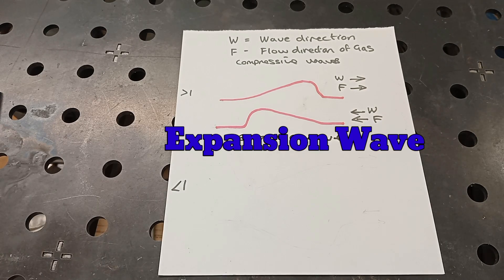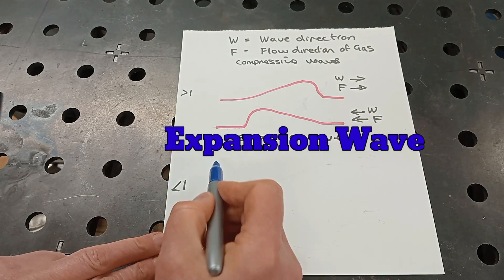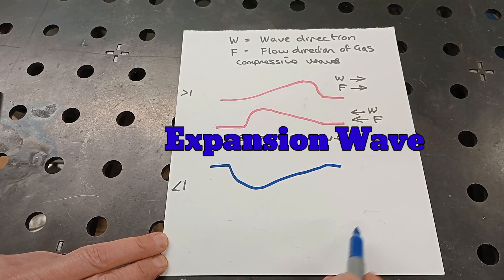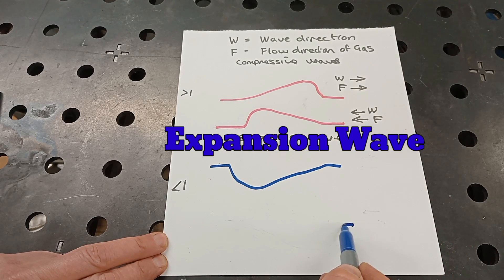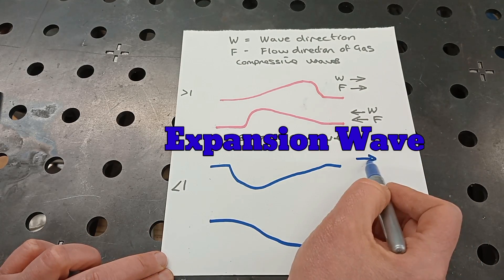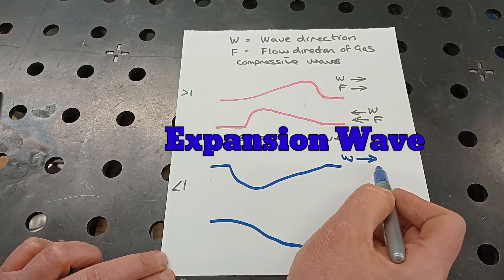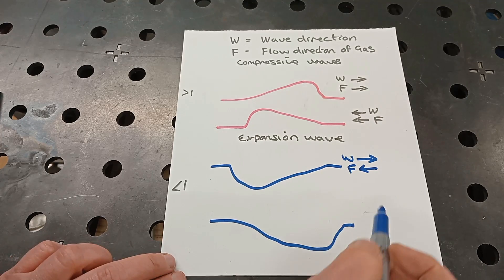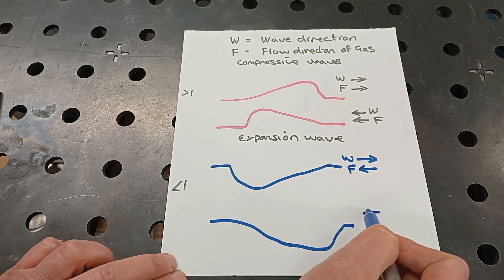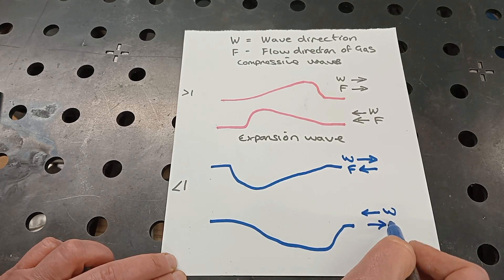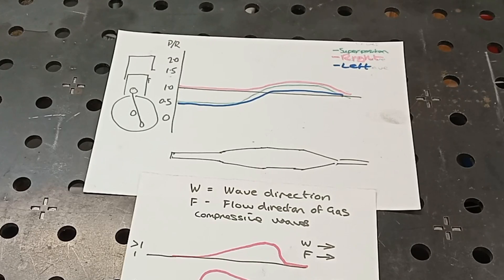So you can have a rightward moving expansion wave would look like this and a leftward expansion wave would look like that. So in terms of direction, the wave is going that way, however the flow it induces into the gas particles is the opposite direction. So when we've got a leftward wave we get a rightward flow.